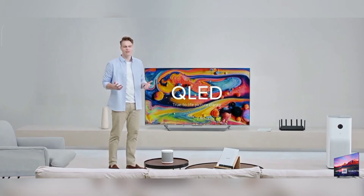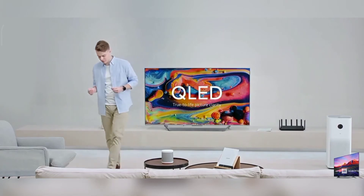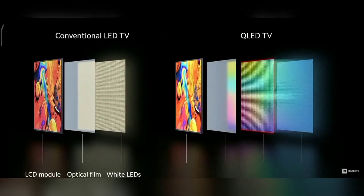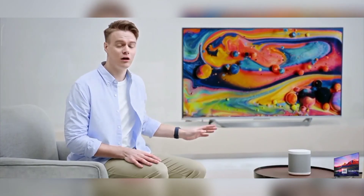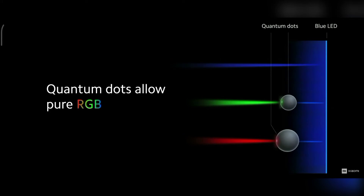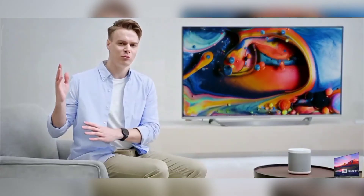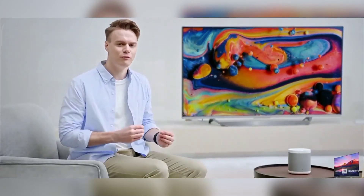But what does QLED mean? It's actually achieved by replacing the white LEDs with blue LEDs, and then adding a layer of quantum dots between the LEDs and the optical film. The quantum dots are semi-conducting particles made from nanoscale crystals. By varying the size of the particle, we can use the blue of the LEDs to create pure red or green.